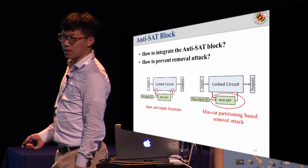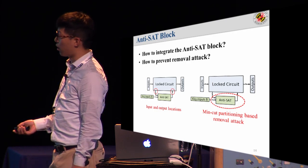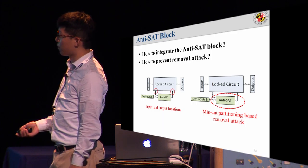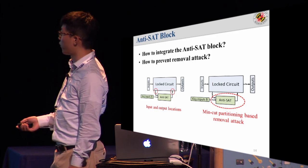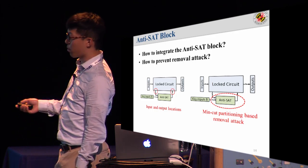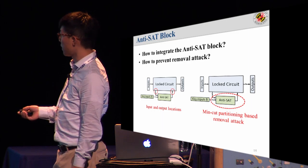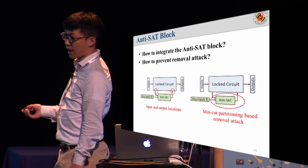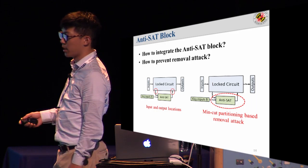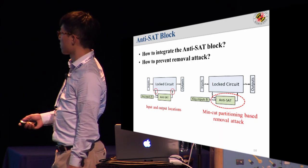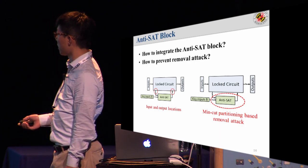The paper also discusses two additional questions: how to integrate the anti-SAT block with the original circuit such that the number of iterations remains exponential in key size, and how to prevent removal attacks. Since the anti-SAT block is an isolated module, a min-cut partitioning-based removal attack could isolate it. We proposed obfuscation techniques to increase interconnectivity between the two modules to prevent this type of attack. Due to time limits, these two topics are not discussed further in this presentation.